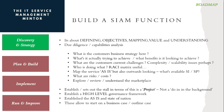Discovery and strategy is about defining objectives, mapping processes and value activities, and understanding — it's a due diligence and capability analysis activity. What's the business strategy? What's the driver? What are they looking to achieve? Perhaps the customer's challenge is complexity or scalability, or maybe it's unclear who's doing what. RACI matrices are really handy tools here to find out who's responsible, accountable, who to consult, and who to keep informed. You're mapping the as-is — what it looks like at the moment.